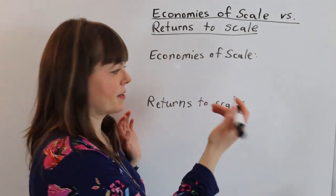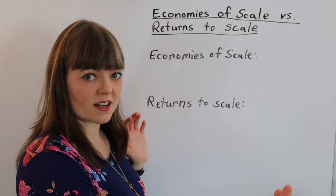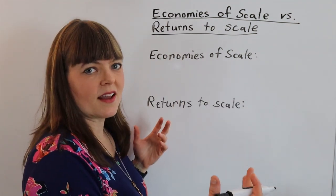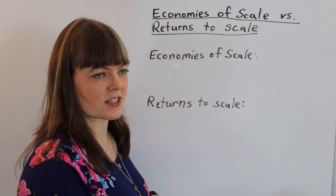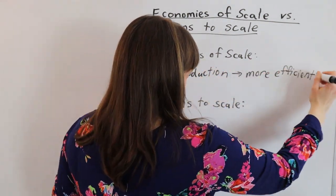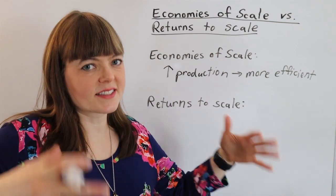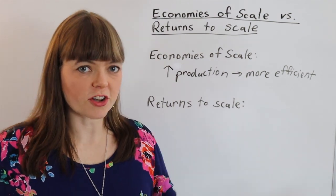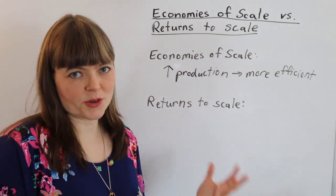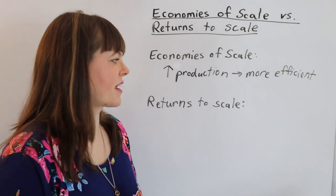Economies of scale is the concept that when you increase production by producing more of something, that makes production more efficient. Behind this is the notion that as companies get larger and larger, those companies can produce things more cheaply. That's the basic idea.